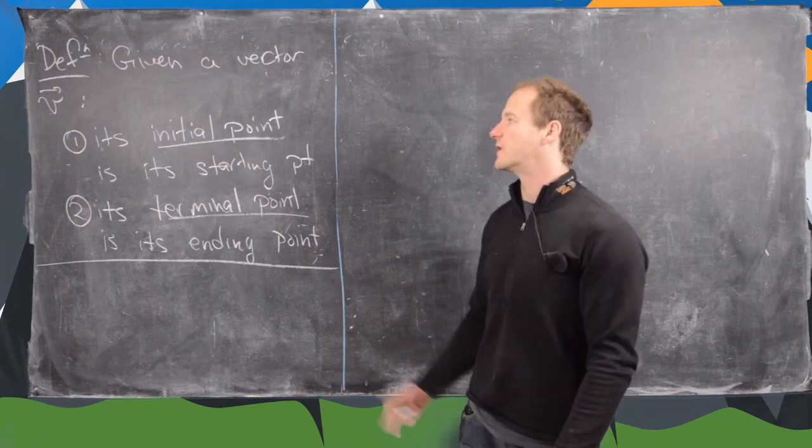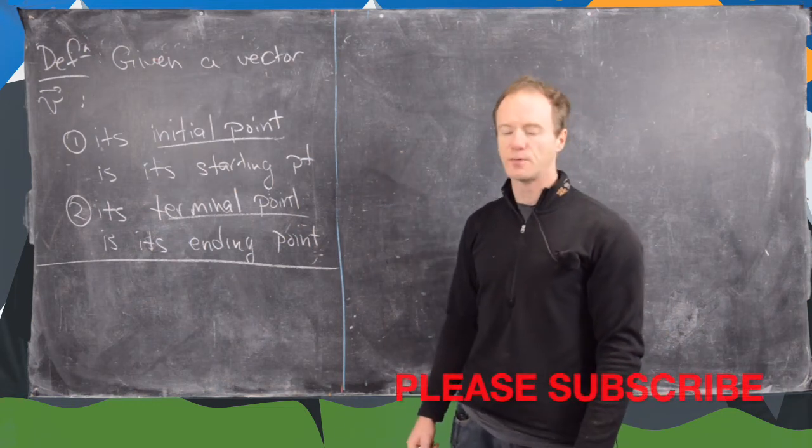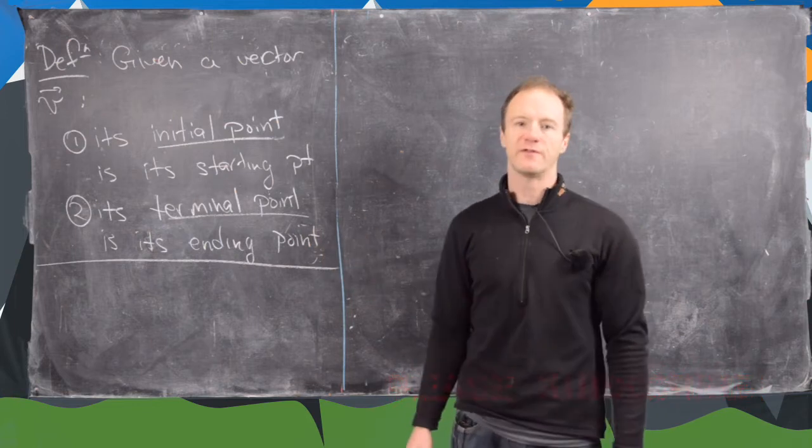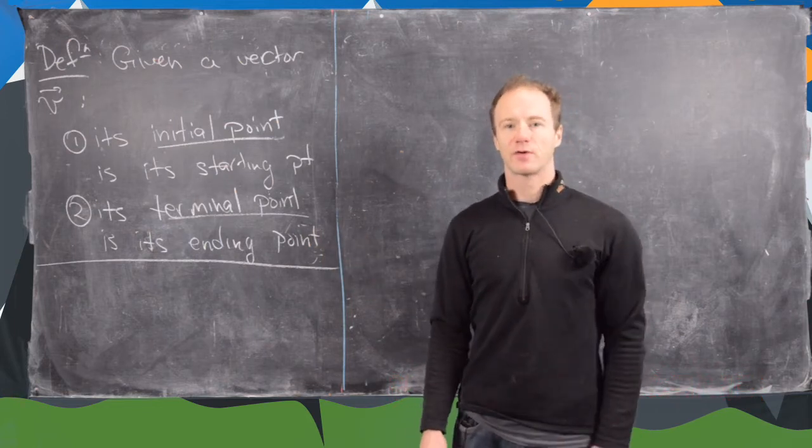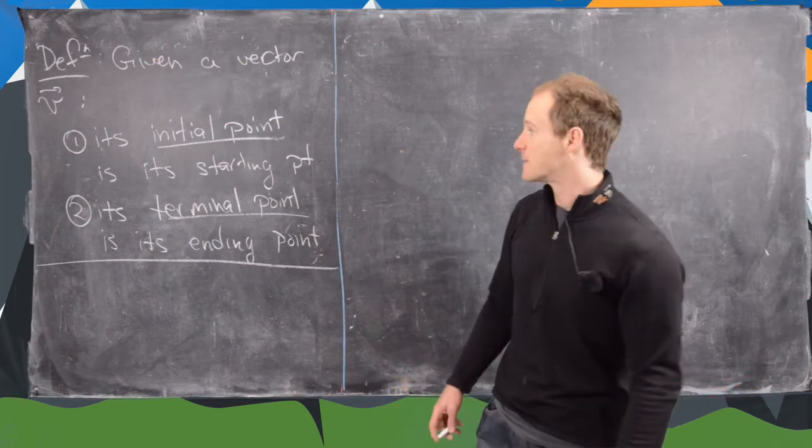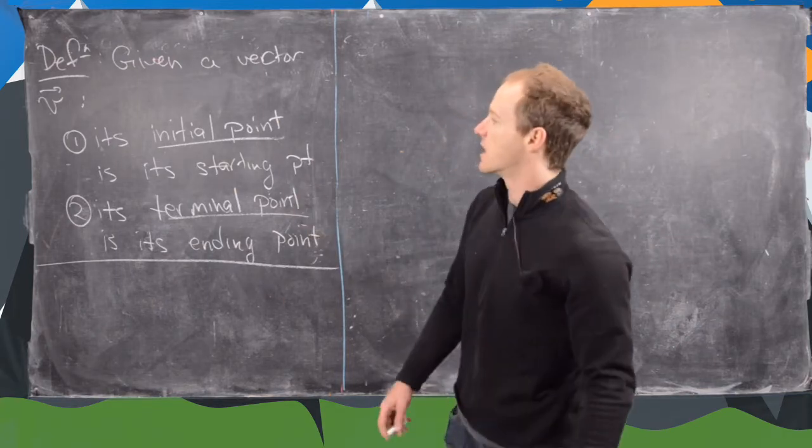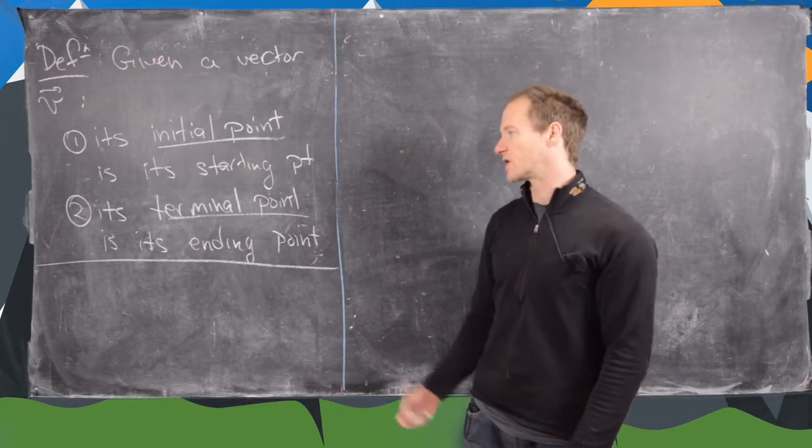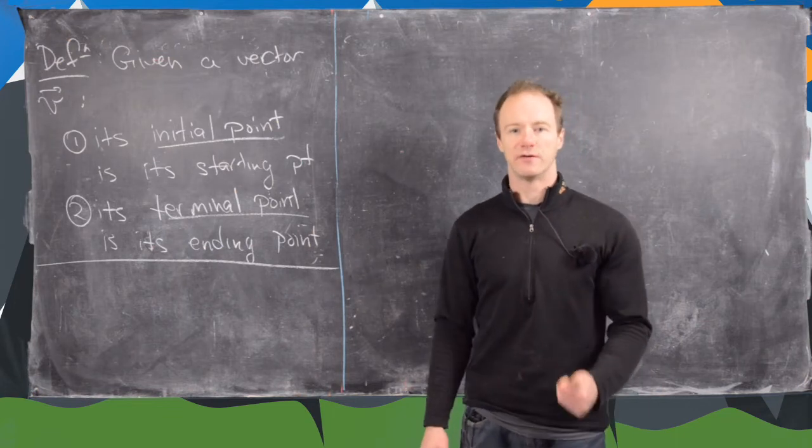In this video we're going to look at the notion of an initial point of a vector, a terminal point of a vector, and some operations that you can do with vectors. As we can see here, the initial point is the starting point of a vector and the terminal point is the ending point of a vector.